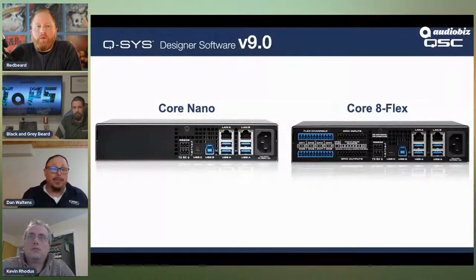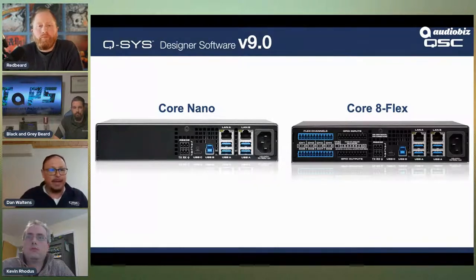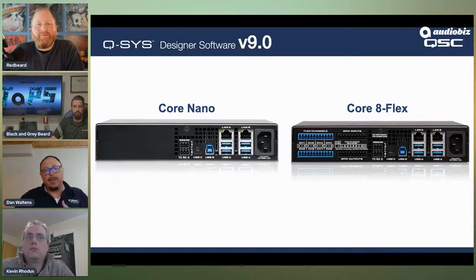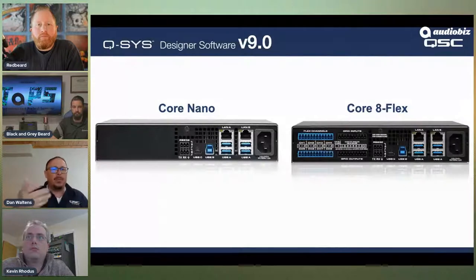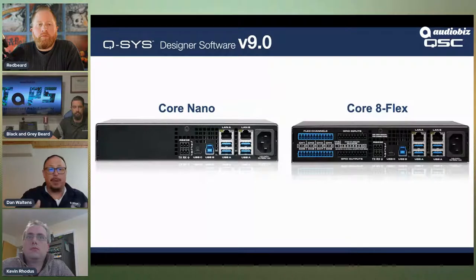Version 9.0 brings these new devices into the designer so you can actually design with them. They're standard half-rack form factor with all mounting hardware included. They can be racked together and paired with our amps or NV32. The Core Nano on the left has no analog I/O but has two RS-232 ports, fully bidirectional, for remote control of other devices.